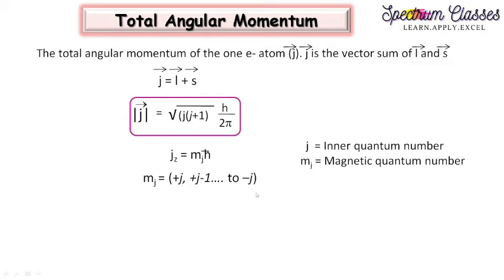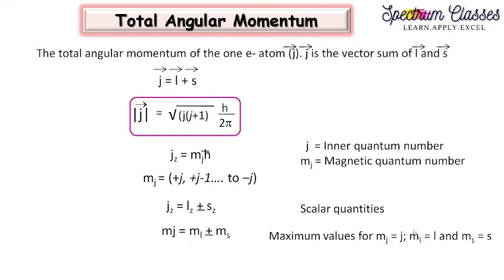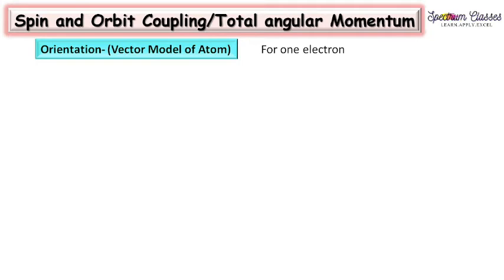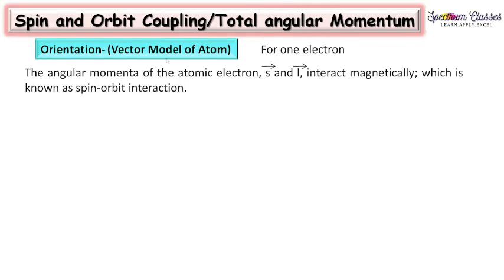Now coming to the vector model of the atom: how we calculate total angular momentum by combination of spin and orbital angular momentum. For one electron, consider the orbital angular momentum L and spin angular momentum S of the atomic electron, which interact magnetically — this is known as spin-orbit interaction. So j = l + s, giving the resultant J by vector addition.